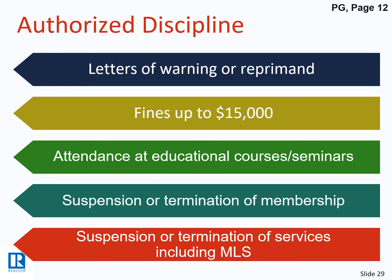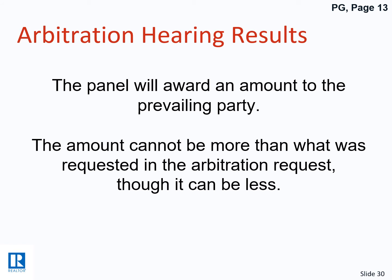At an ethics hearing you can have legal counsel, and you can also have another Realtor knowledgeable in the Code serve as your counsel. After hearing all facts and evidence, the hearing panel produces what's called the Findings of Fact — a written account of how they see things. Punishments should fit the action: a first-time offense might result in a letter of reprimand, but depending on the severity it can go up to a $15,000 fine or loss of membership. For arbitration, the standard of proof is based on a preponderance of the evidence — evidence which as a whole shows the facts sought to be proved are more probable than not. There are no findings of fact in arbitration; the panel simply awards money to the prevailing party.